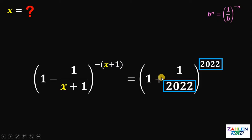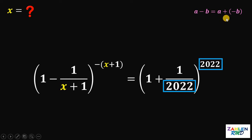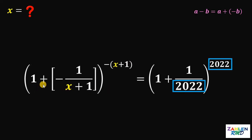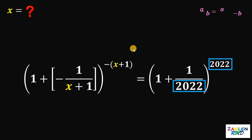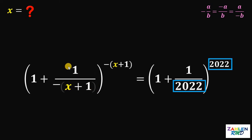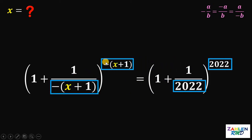We have addition on the right-hand side, so we need to force this negative sign to become a positive sign. Recalling the property: if we have a minus b, it is equivalent to a plus negative b. Therefore, 1 minus 1 over x plus 1 can be written as 1 plus negative of 1 over x plus 1. Also, negative a over b is equivalent to a over negative b, so negative 1 over x plus 1 becomes 1 over negative x plus 1. As you can see on the left-hand side, we now have 1 plus 1 over that expression, raised to the same expression.